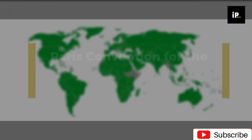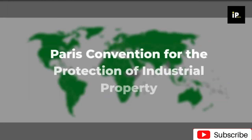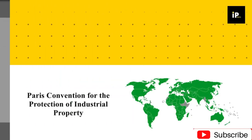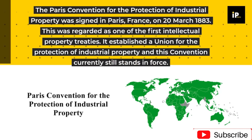The Paris Convention for the Protection of Industrial Property was signed in Paris, France, on March 20, 1883. This was regarded as one of the first intellectual property treaties. It established a union for the protection of industrial property, and this convention currently still stands in force.